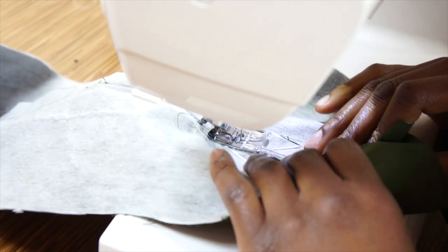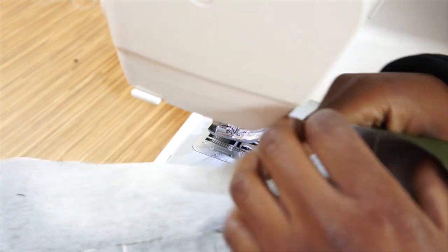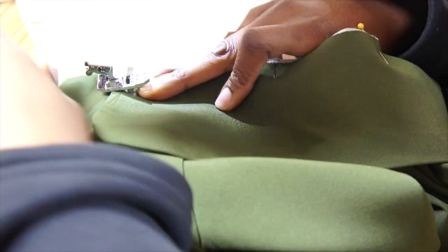Once the understitching is complete and you have pressed out your seams, it's time to sew the collar onto the jacket or trench coat, whichever one you want to call it.